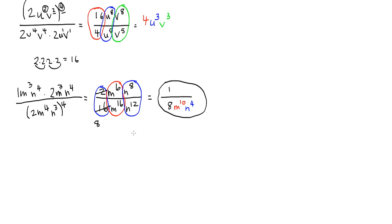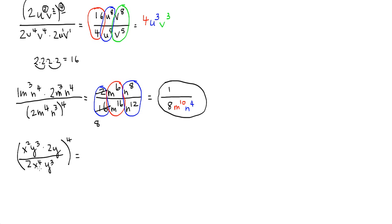Let's do a power of a quotient problem. We have x squared y to the third times 2y over 2x to the fourth y to the third, all raised to the fourth power. There are two valid methods: first, raise everything inside to the fourth power right away; or second, simplify inside the parentheses first, then raise to the fourth power. I prefer the latter — simplify first.